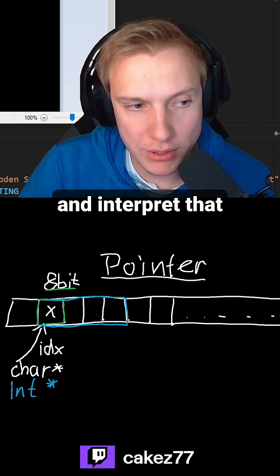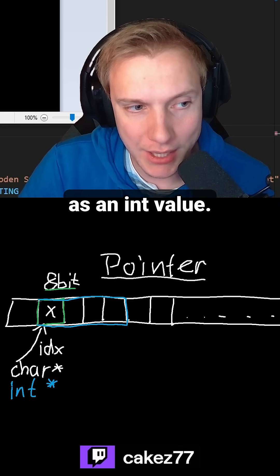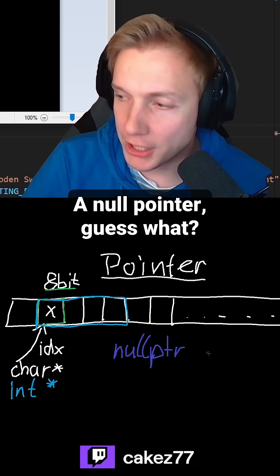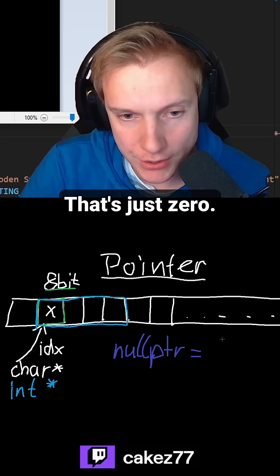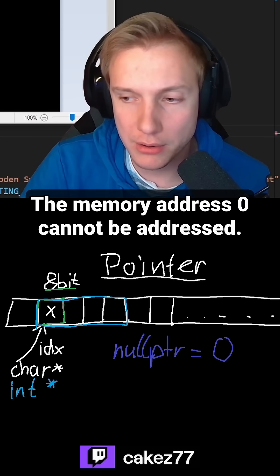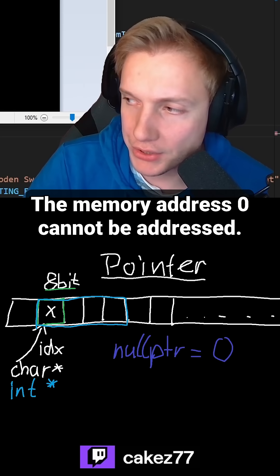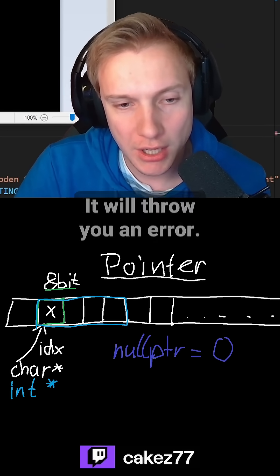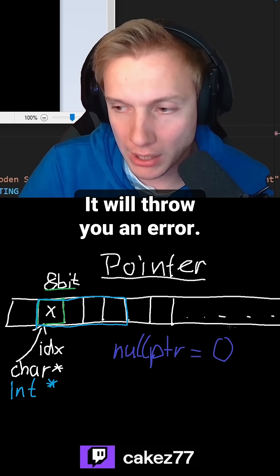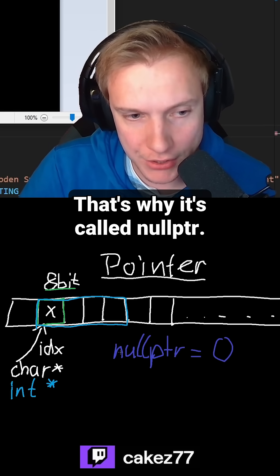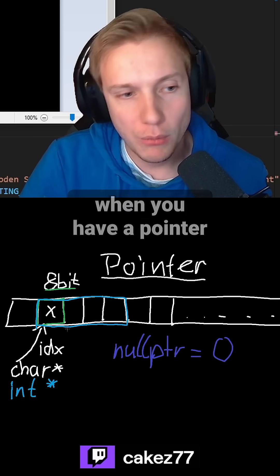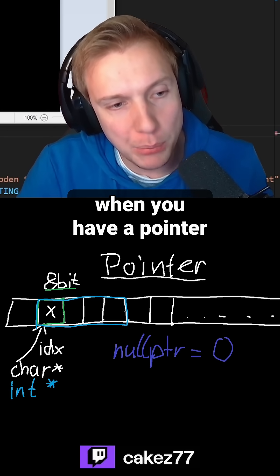And interpret that as an int value. A null pointer — that's just zero. The memory address zero cannot be addressed; it will throw you an error, which is why it's called a null pointer.